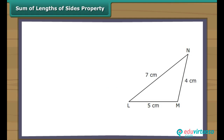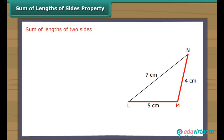In triangle LMN, LM is 5 cm long, MN is 4 cm long, and NL is 7 cm long. Let us first look at the sum of the lengths of two sides. LM plus MN equals 5 plus 4, which equals 9 cm, which is greater than NL, which equals 7 cm.